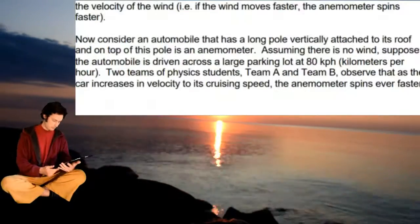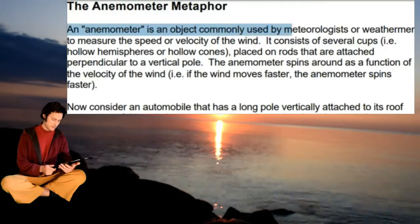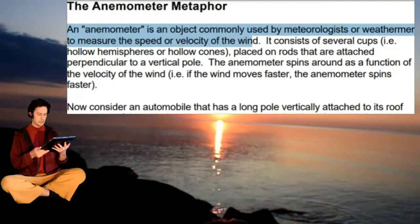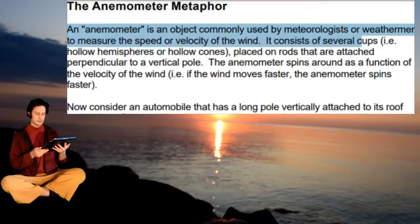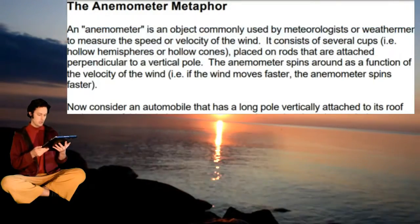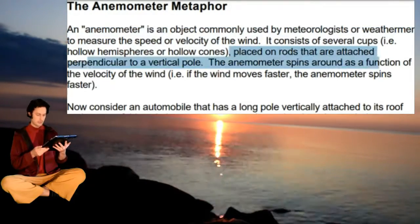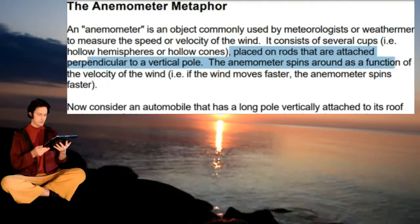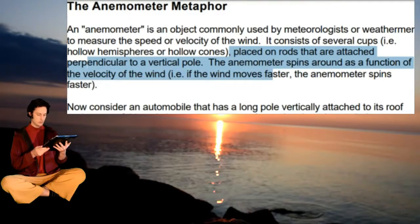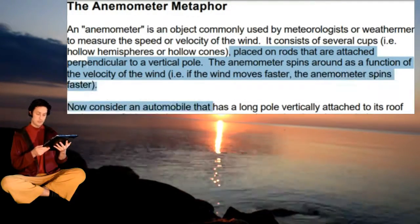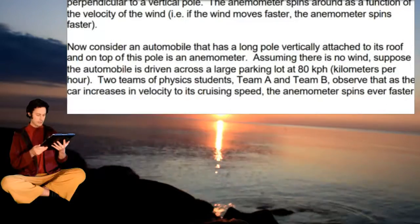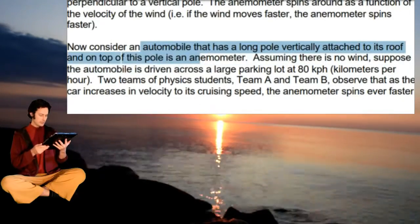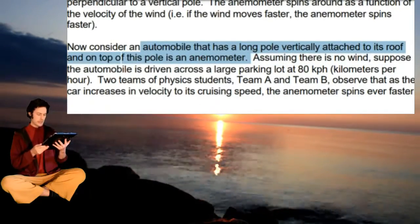The anemometer metaphor. An anemometer is an object commonly used by meteorologists or weathermen to measure the speed or velocity of the wind. It consists of several cups — hollow hemispheres or hollow cones — placed on rods attached perpendicularly to a vertical pole. An anemometer spins around as a function of the velocity of the wind; that is, the wind speeds faster, the anemometer spins faster. Now consider an automobile that has a long pole vertically attached to its roof, and on top of this pole is an anemometer.